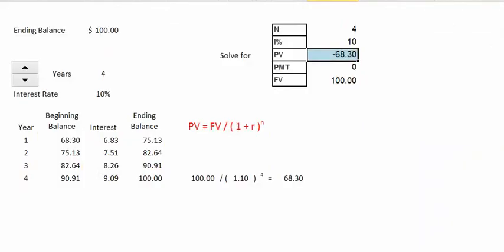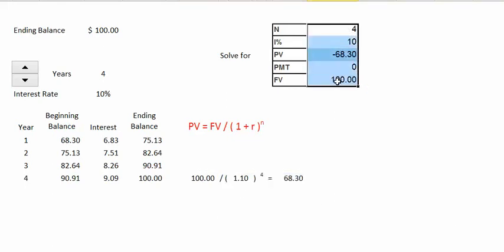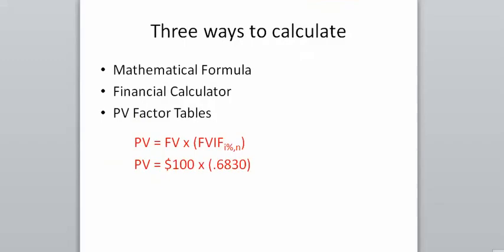To calculate the present value of $100 at 10% interest for 4 years, we can use our mathematical formula, our financial calculators, or our present value interest factor. We take the $100 future cash flow and multiply it by 0.6830 — the present value interest factor at 10% for 4 years — and we get the same present value of $68.30.